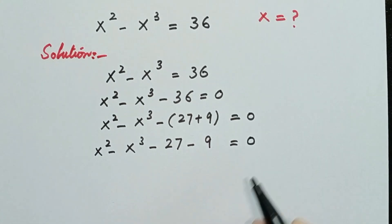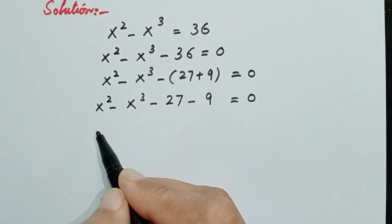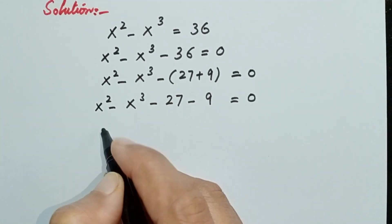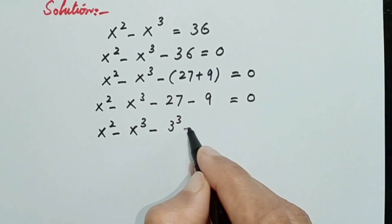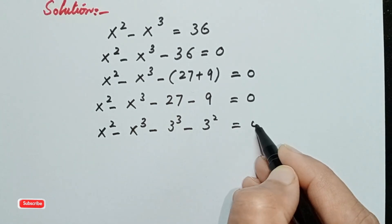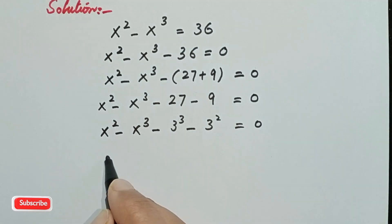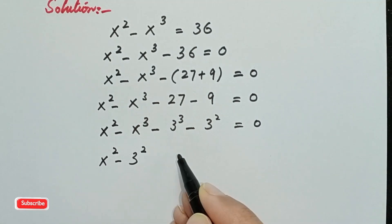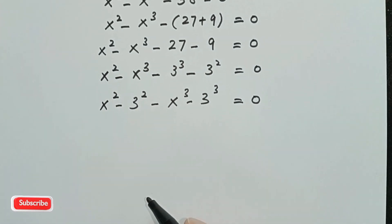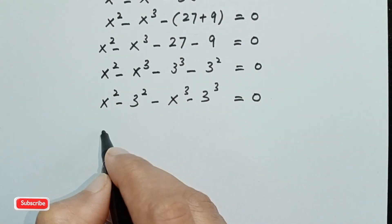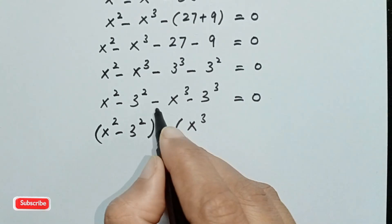We will open the parentheses, giving minus 27 and minus 9, equal to 0. Now, 27 can be written as 3 to the power 3, and 9 can be written as 3 to the power 2. We will group the same powers together: x squared minus 3 squared together, and x cubed minus 3 cubed together, equal to 0.